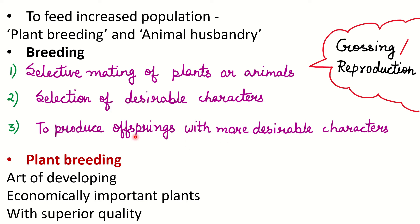There are two parents — male and female — each with desirable characters. Plant breeding is the art of developing economically important plants with superior quality. We develop plants with superior quality, and those plants will have great characteristics for our benefit.